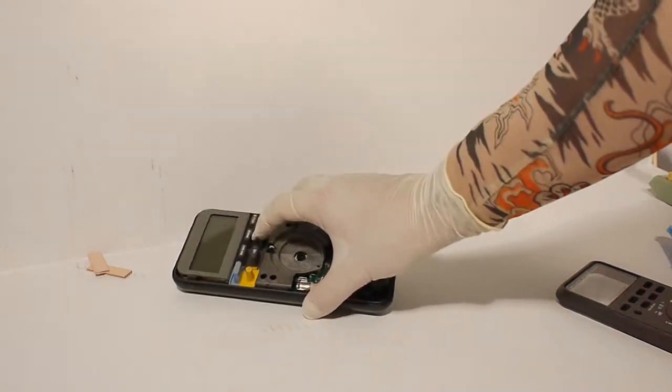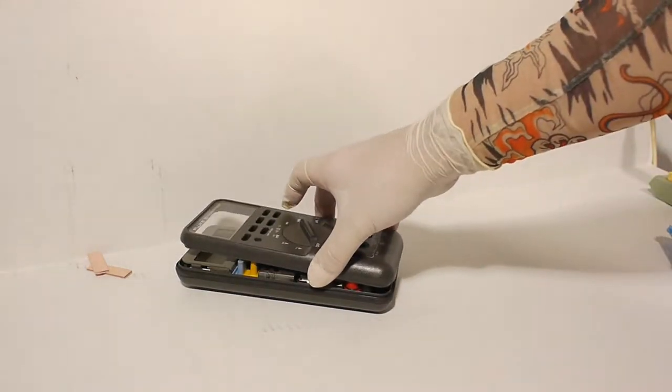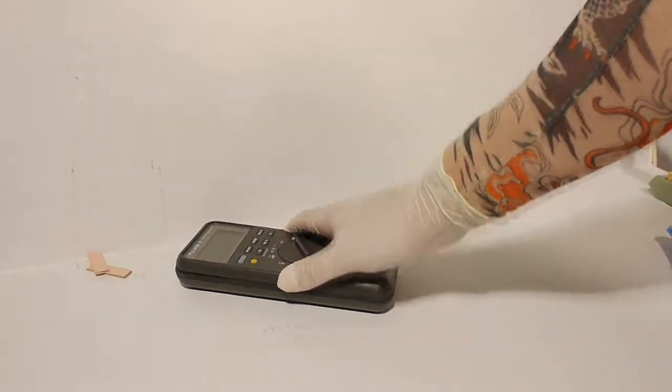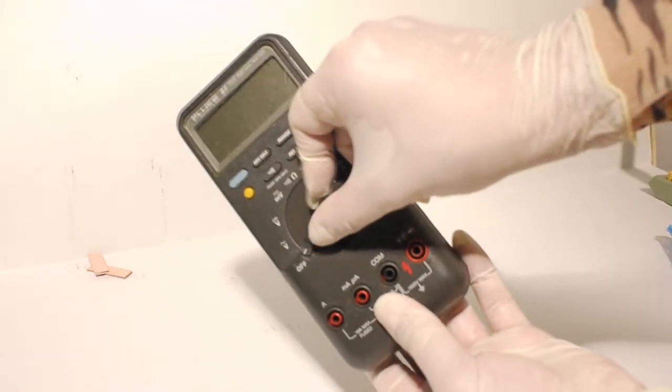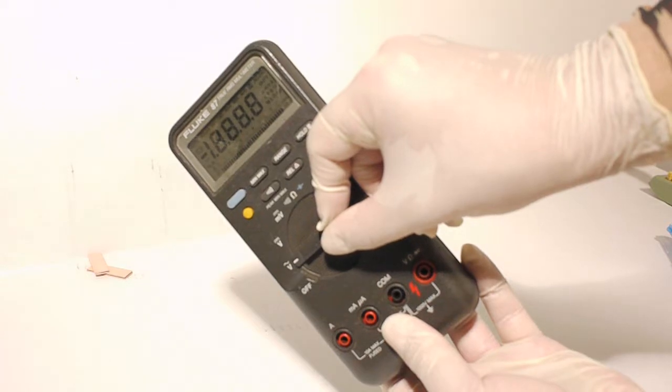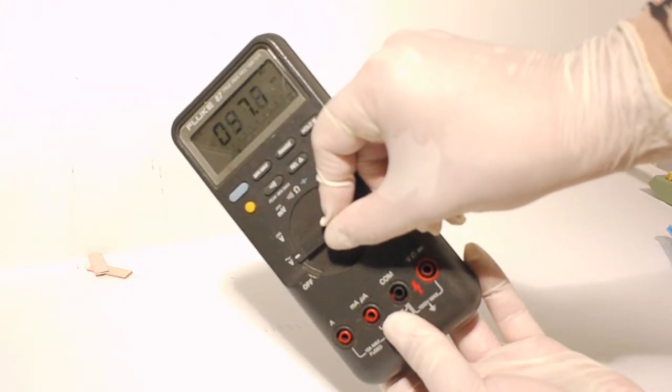Step sixteen. Place the top case onto the meter. Starting from the bottom, apply pressure towards the top until it snaps into place. Step seventeen. Turn your meter on and verify that the LCD is clear and bright with no faded segments.